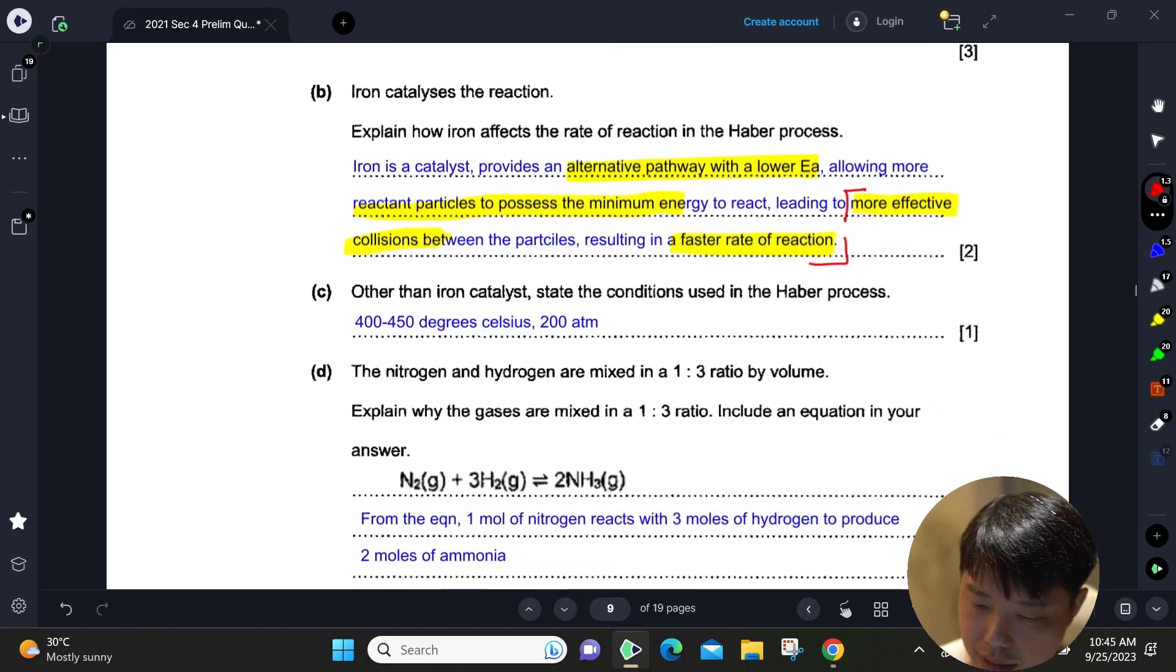Part C, other than iron catalyst, state the conditions. Other conditions are 450 degrees Celsius and 200 atm.